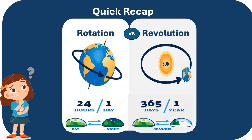Whereas, a revolution is where Earth takes a round of the Sun. The complete one round causes different seasons like summer, winter, spring, or autumn. This complete revolution which Earth takes around the Sun takes 365 days to complete it, which is one year.